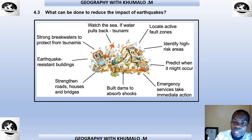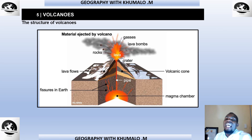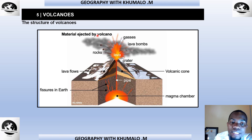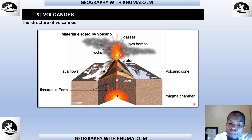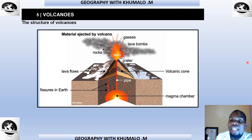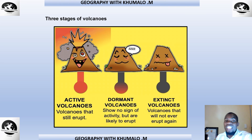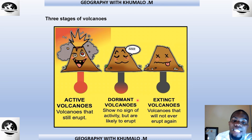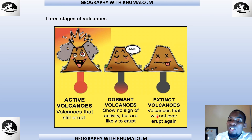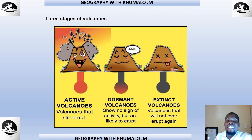The last topic from Term 2 is volcanoes. The structure of a volcano includes a pipe, a fissure in the earth, a magma chamber, a volcanic cone, and a lava flow — you need to remember these. There are three stages of volcanoes: active volcanoes, which still erupt; dormant volcanoes, which show no current signs of activity but are likely to erupt again; and extinct volcanoes, which will never erupt again.